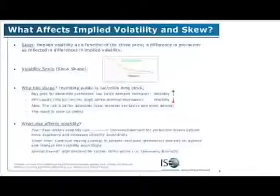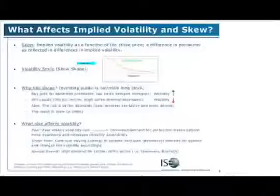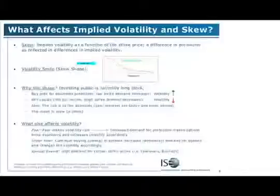The volatility skew is higher as the strike price goes down, and it gets lower as the strike price goes up. The reason is that most people are long stock and they buy puts for protection, and they'll sell upside calls, like in a buy-write or some sort of income-returning strategy. So basically, people are usually always selling the upside calls and buying the downside puts.